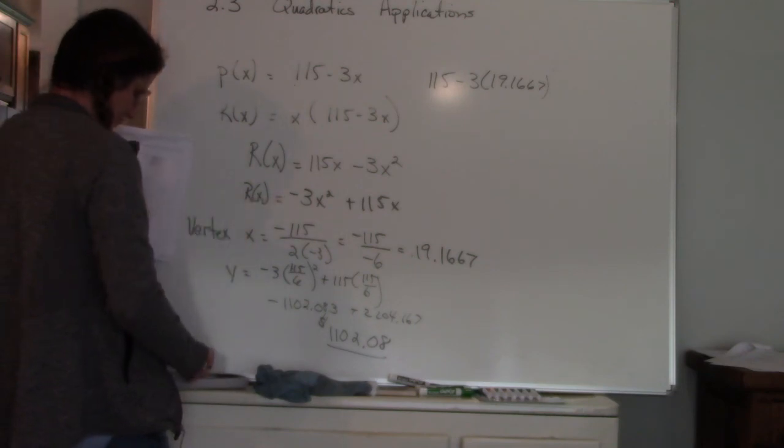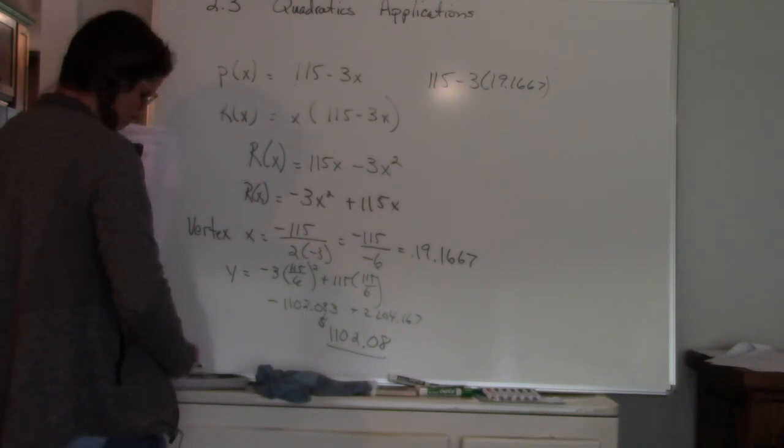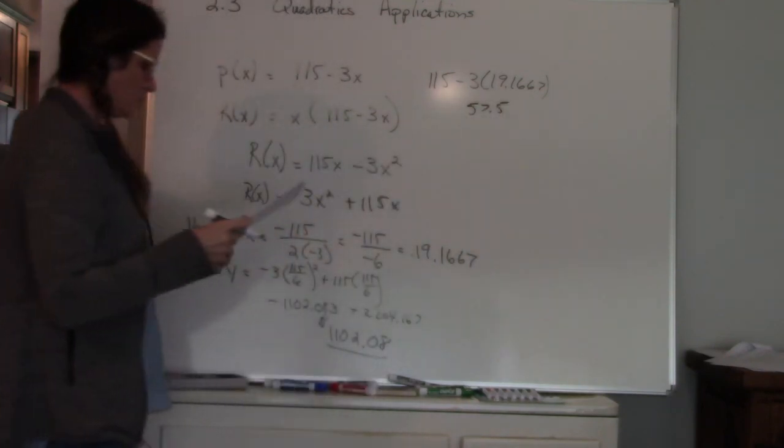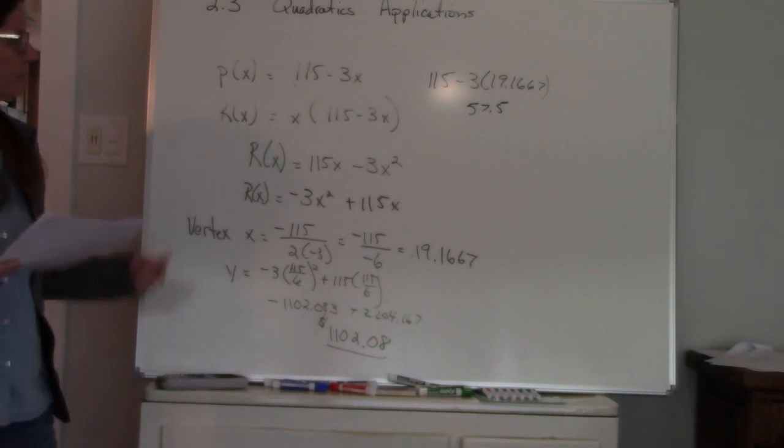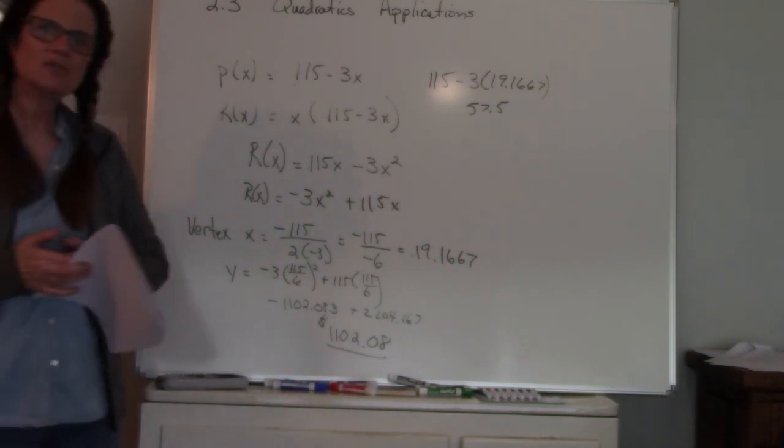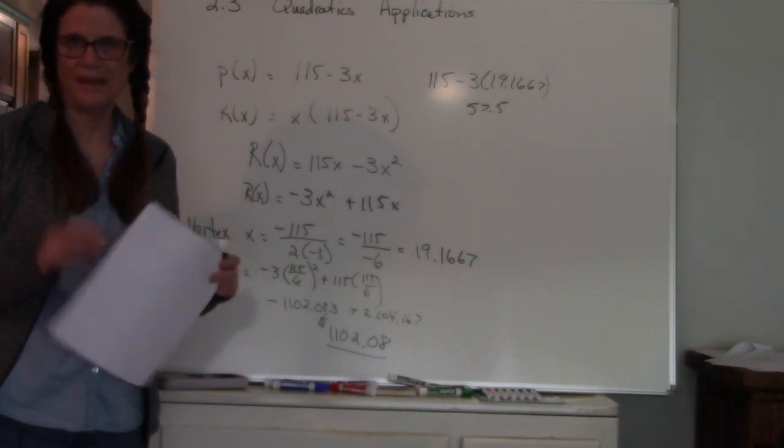So I get about 57 and a half. It says round to the nearest dollar so about $58. So it costs about $58 to produce each chip. So the key is making sure that you connect the term maximum and vertex, that's the key.